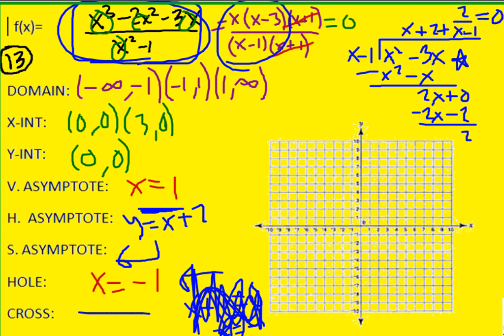So we got just about everything in this problem. So we have a vertical asymptote at x equals one, no horizontal asymptote, but the slant asymptote is x plus two.